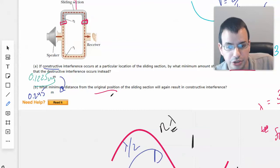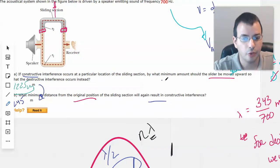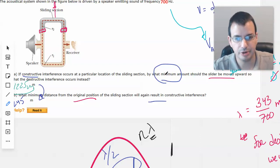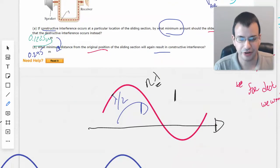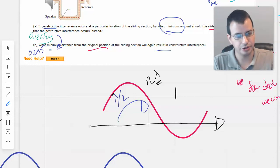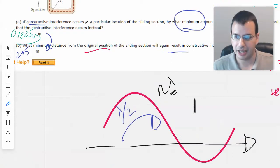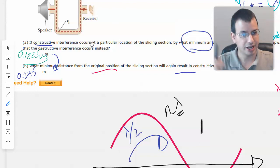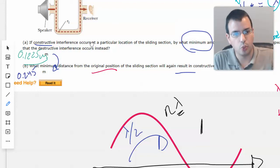So, when we have distance from the original position, we would again result in constructive. Now, one of the reasons they say minimum here is because you'll get destructive interference at one half wavelength extra, but then you'll keep getting it at one and a half, two and a half, three and a half, four and a half. So, there's as many places as you want to get destructive. But it's easier to probably be more specific and get the similar answers. They just ask for the smallest one. And the smallest one will be one half wavelength, which gives you this point 0.1225.